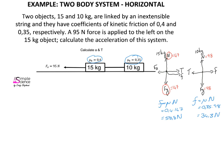The first step in any two-body system is to draw a free body diagram for each object and calculate any unknown forces. The next step is to write a Newton's second law expression for each object.